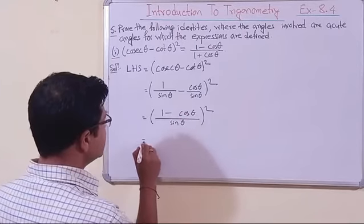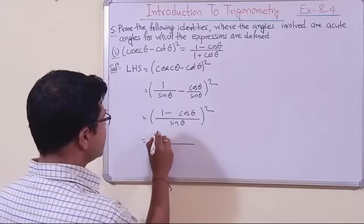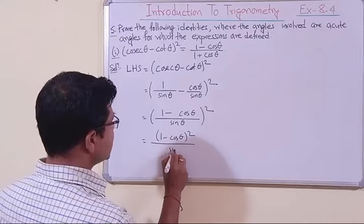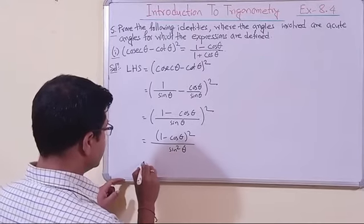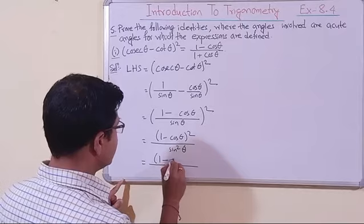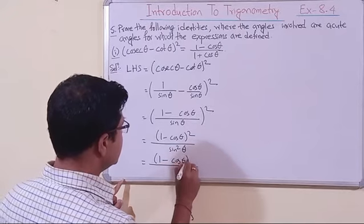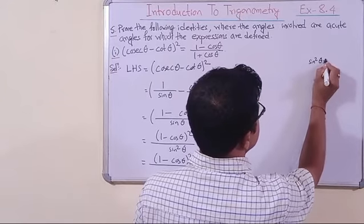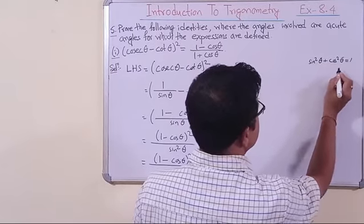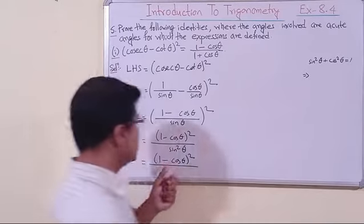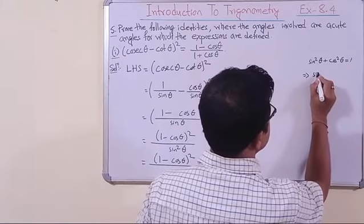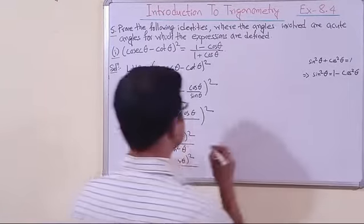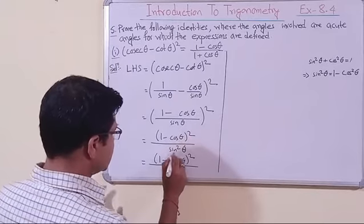This can be expressed as (1 - cos θ)² / sin²θ. Now the first identity was sin²θ + cos²θ = 1, so from there sin²θ will be equal to 1 - cos²θ. Let us substitute here: sin²θ is replaced by 1 - cos²θ.